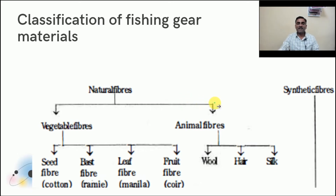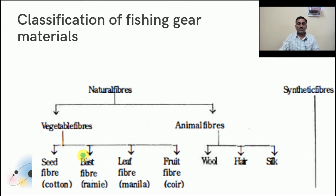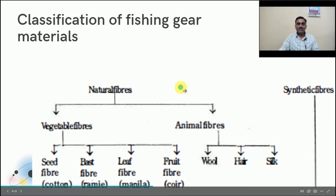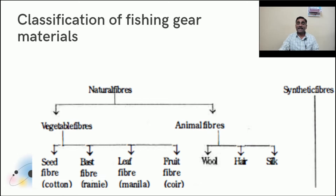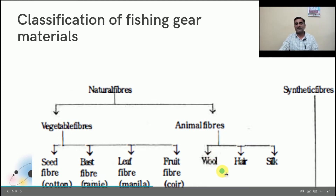Natural fibers are classified according to the source from which they are obtained — first, vegetable fiber, and second, animal fiber. Vegetable fibers are obtained mainly from plants, while animal fibers are obtained from animals. Vegetable fibers are again classified into four types: seed fiber (example: cotton), bast fiber (example: ramie), leaf fiber (example: vanilla/sisal fiber obtained from the leaf of the plant), and fruit fiber (example: coir fiber obtained from the coconut fruit). Animal fibers are divided into three types, obtained from wool, hair, and skin.